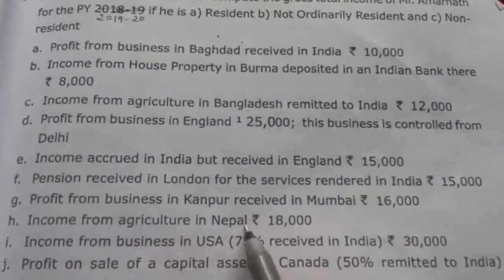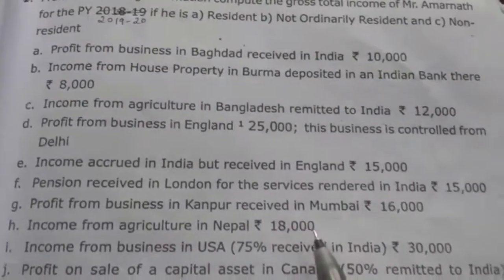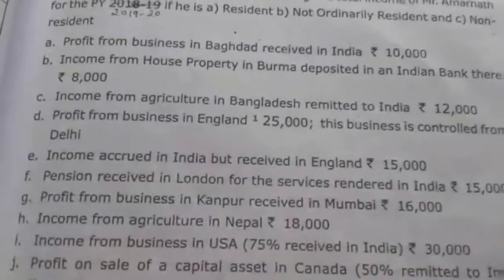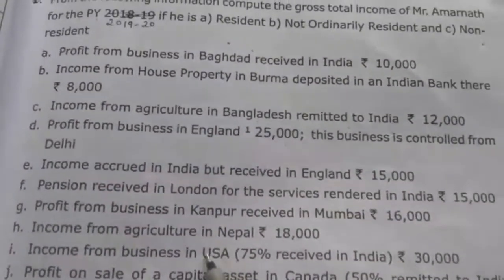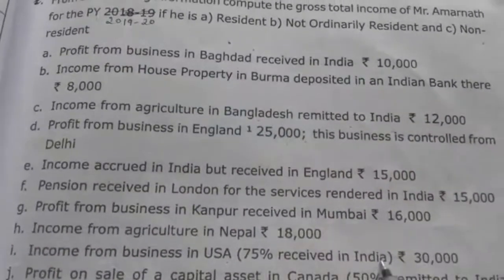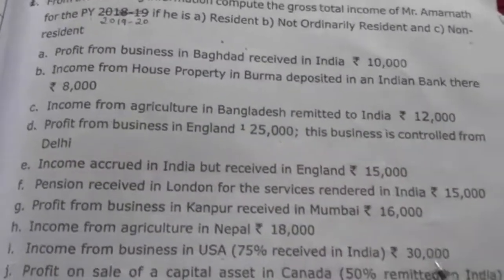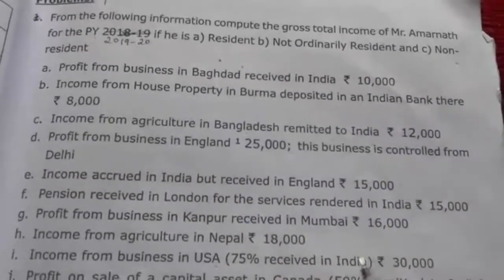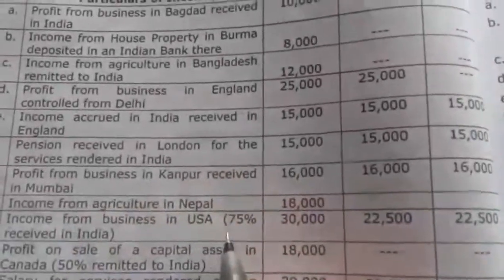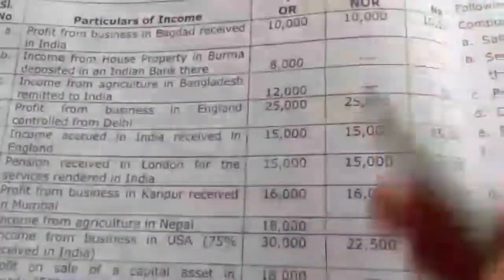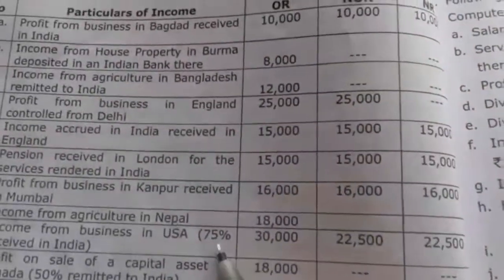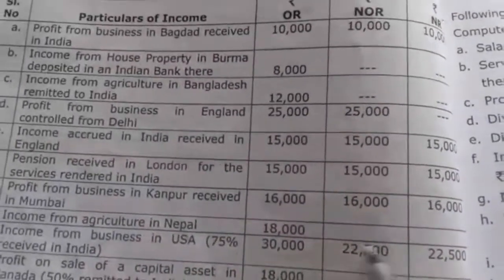Eighth, income from agriculture in Nepal Rs. 18,000 — foreign income, taxable only in the hands of the ordinarily resident. Ninth, income from business in USA Rs. 30,000 — foreign income, so Rs. 30,000 is taxable in the hands of the ordinarily resident. Since 75% is received in India, only 75% (Rs. 22,500) is taxable under the not ordinarily resident and non-resident columns.